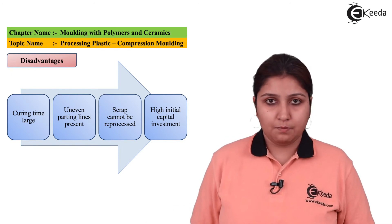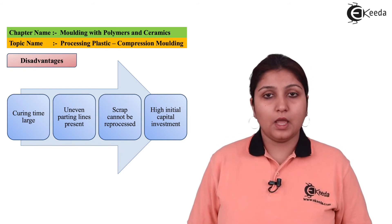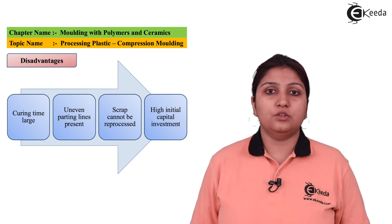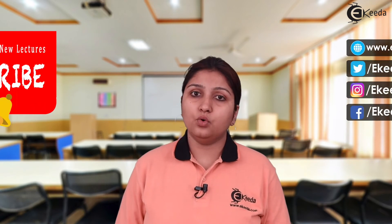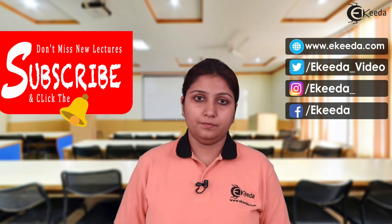Some examples of compression molded products include: car parts, ash trays, and other rotational parts, which can also be made through the compression molding process. Thank you for watching.